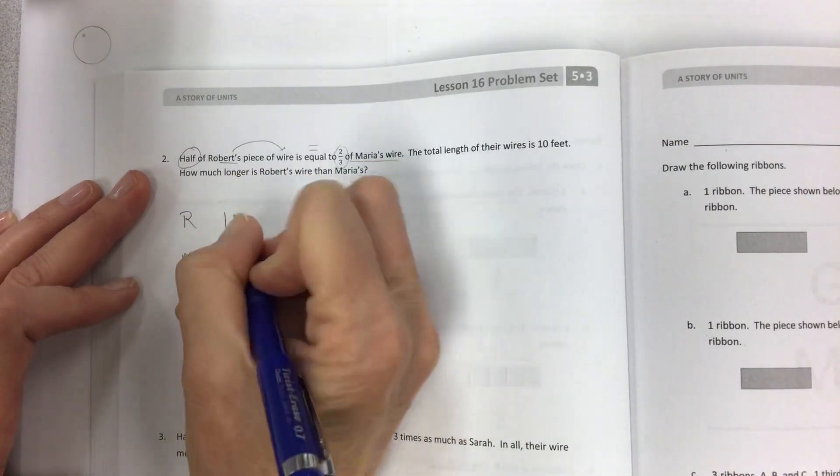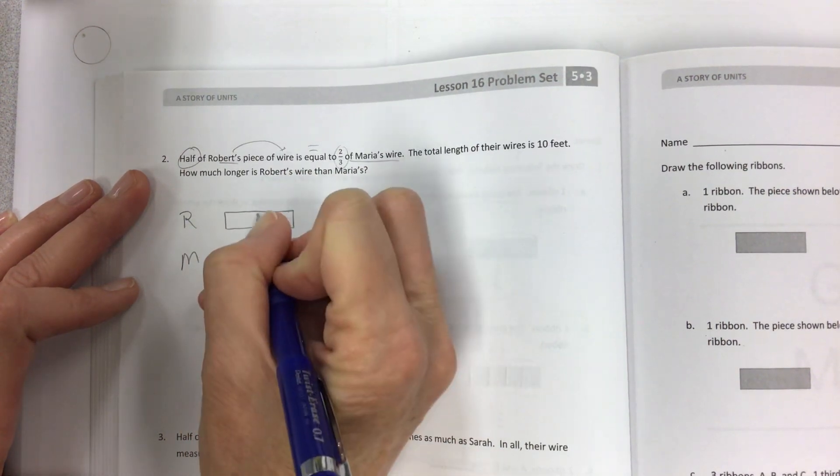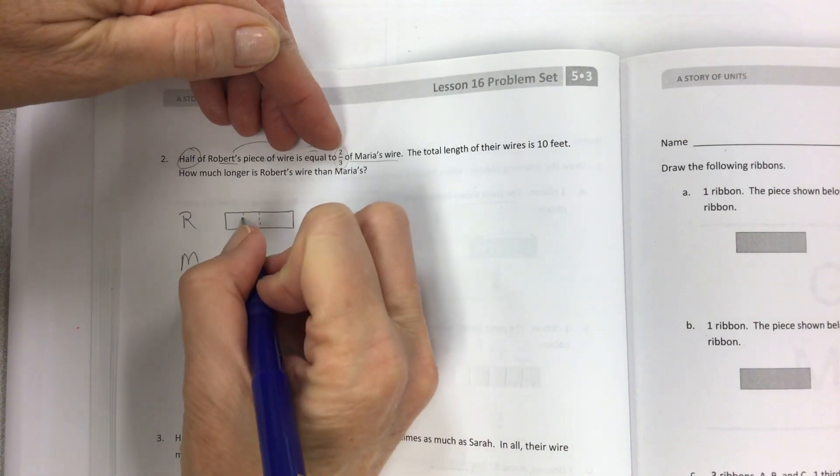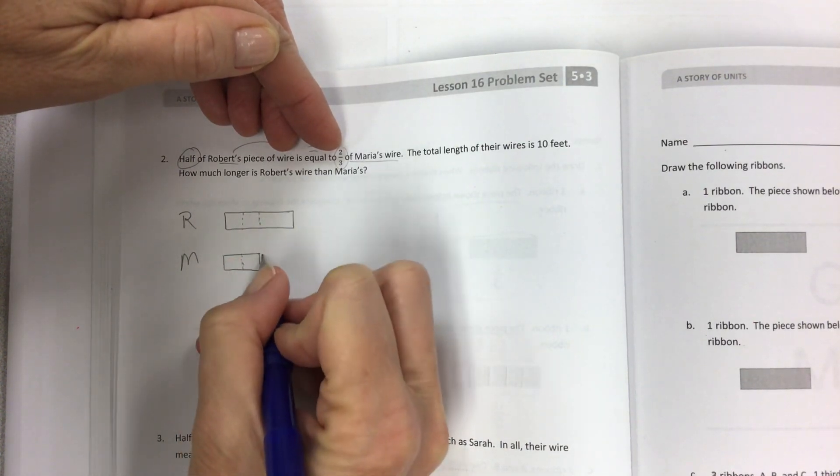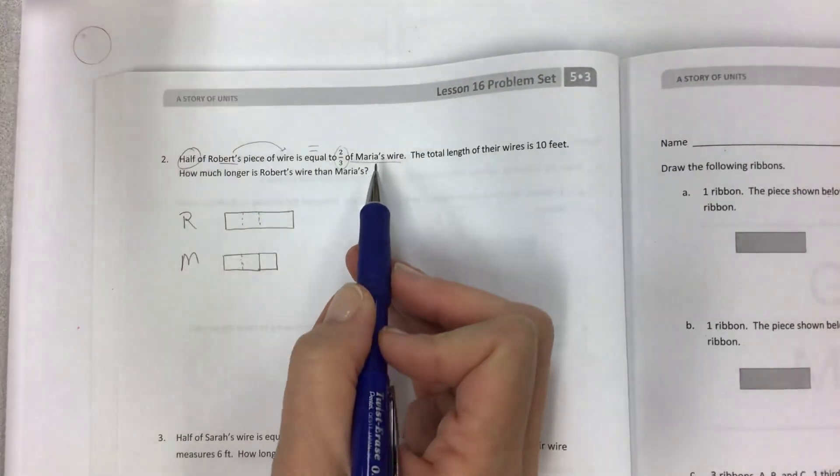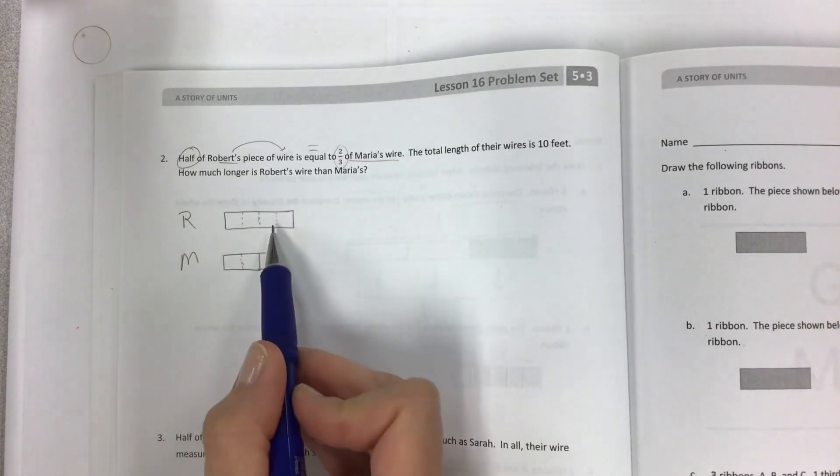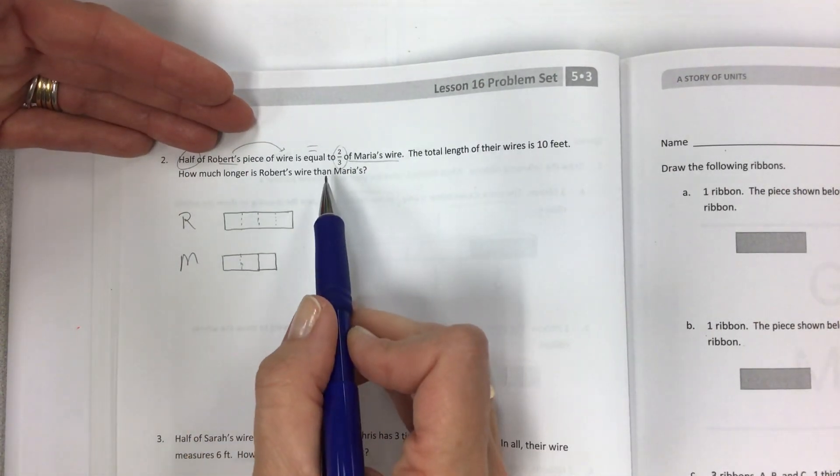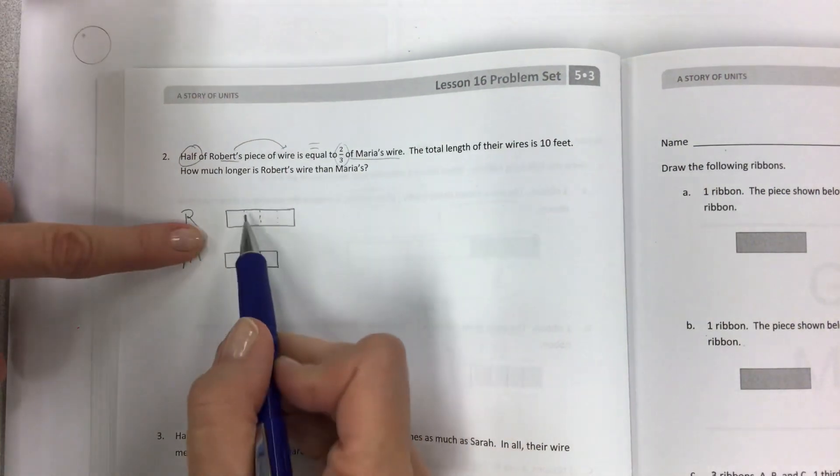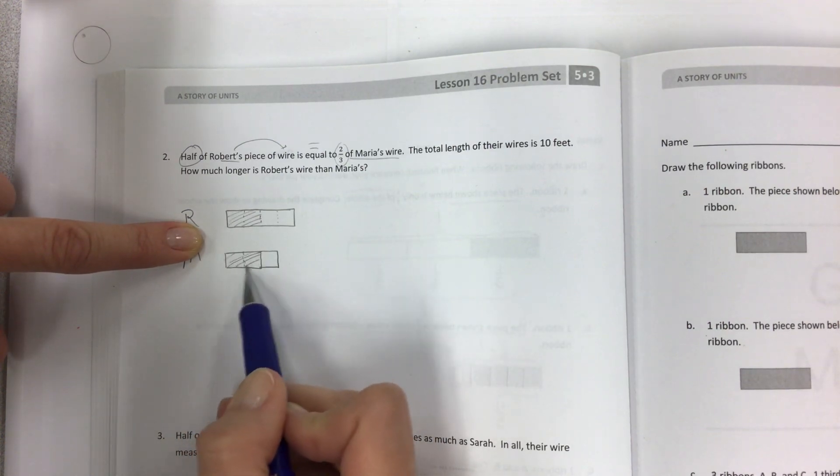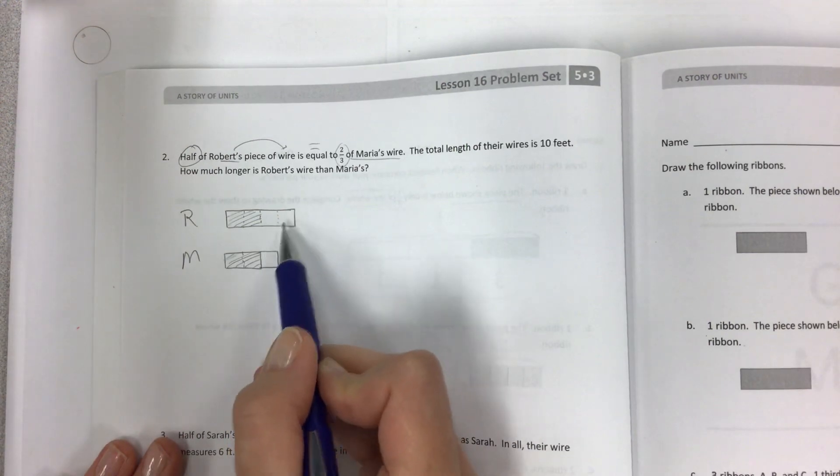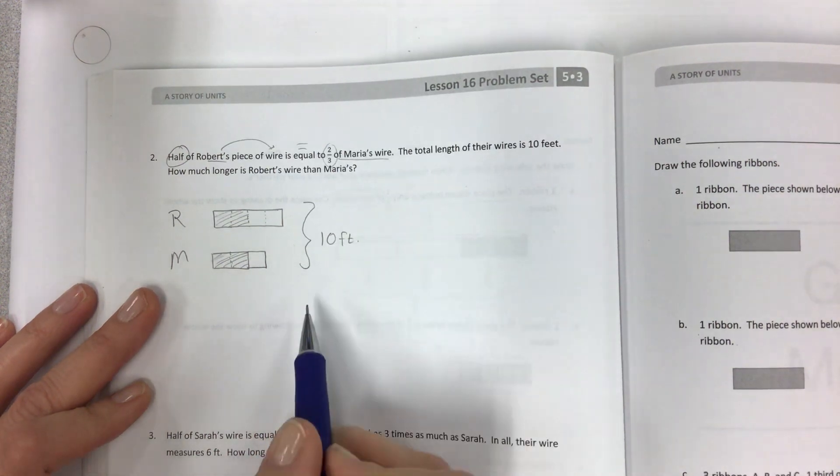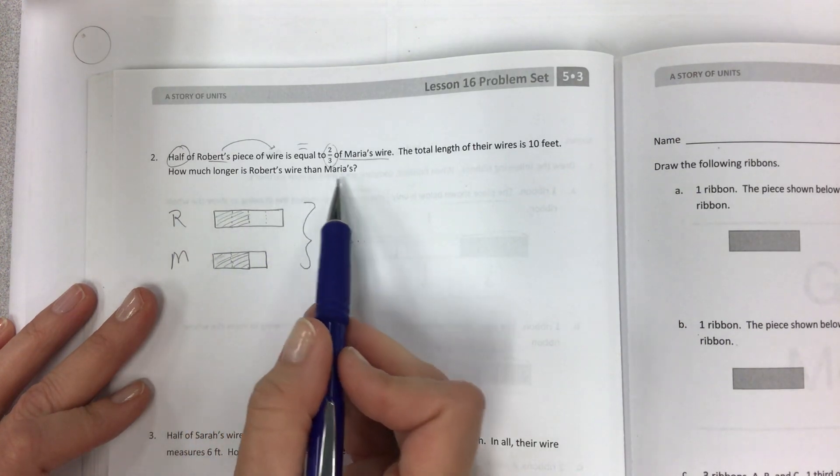Half of Robert's piece of wire is equal to two-thirds. Let's say I've got Robert and Maria, and half of his wire is equal to two out of three pieces of Maria's. Let's divide his into four pieces so that I can see the total amount and compare them. If I have this, that's equal to this. My drawing is matching. This extends out and this is extra. The total length is 10 feet.